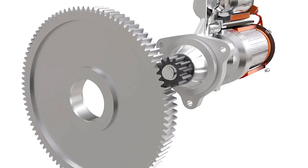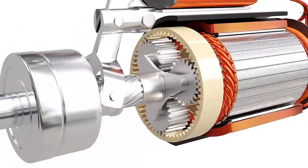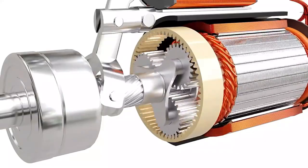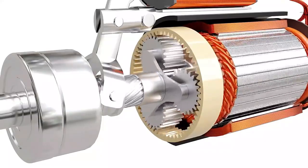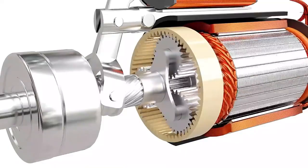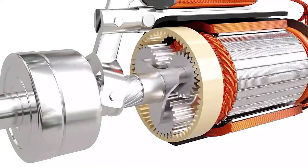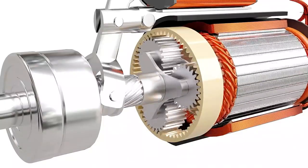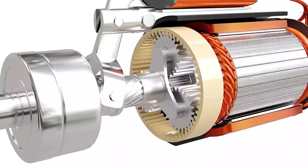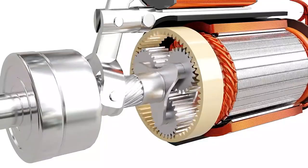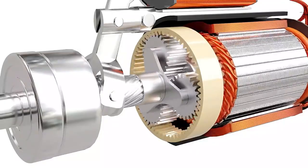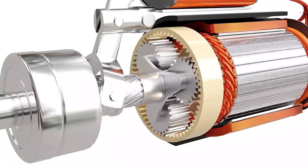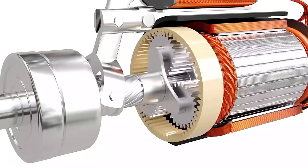So a planetary gear set is introduced to increase the torque further. Planetary gears are incredibly useful for large gear reductions with less weight and limited space. It consists of a sun gear, a ring gear, a carrier, and a set of planet gears. In starters, the ring gear is fixed, the sun gear is the input, and the planet carrier is the output. For the setup shown here, the gear ratio is 7:1.